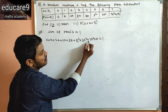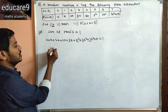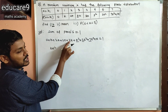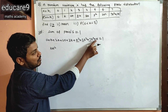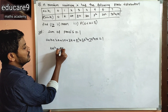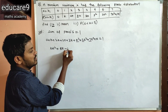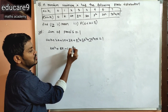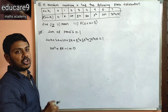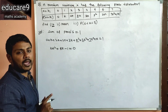Collecting K² terms gives 10K², and K terms give 9K. So the equation becomes 10K² + 9K − 1 = 0, which is a quadratic equation in K. We need to find its factors.